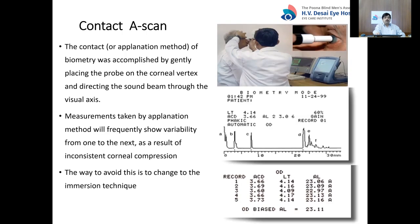There are three ways of doing A-scan biometry. The most common is the contact A-scan, or applanation method. This is accomplished by placing the A-scan probe on the corneal vertex after applying topical anesthesia, then directing the sound beam along the visual axis. There is a red light at the probe tip for the patient to fixate on. Measurements taken by applanation tend to show some variability due to corneal compression, which is inconsistent even in the best hands.